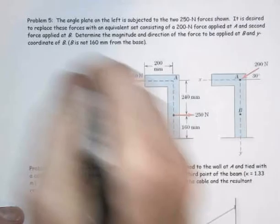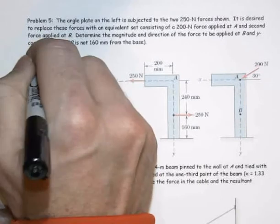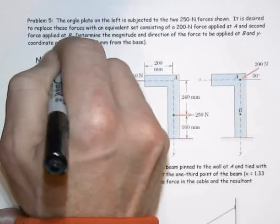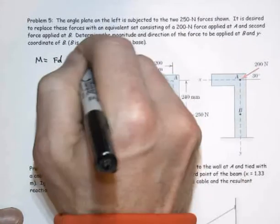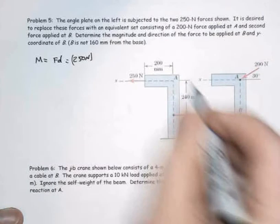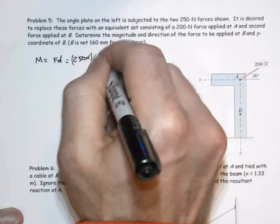First let's get the moment that's created by the original force couple and that's just force times that perpendicular distance. Our force is 250 Newtons. Our perpendicular distance is 240 millimeters.